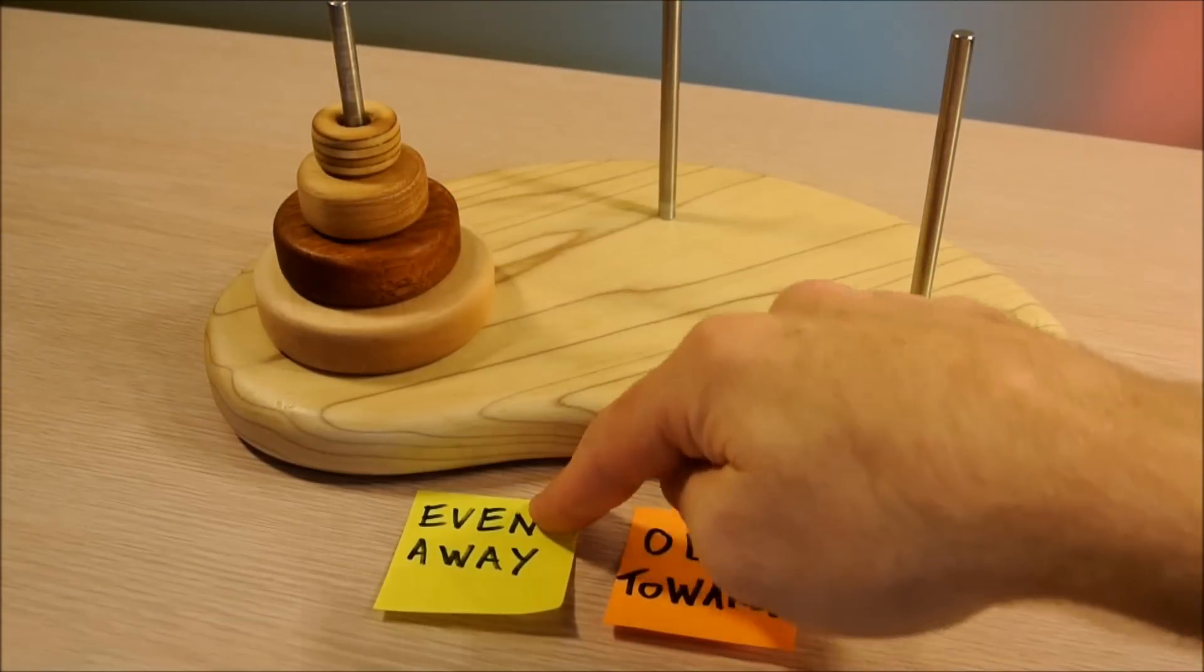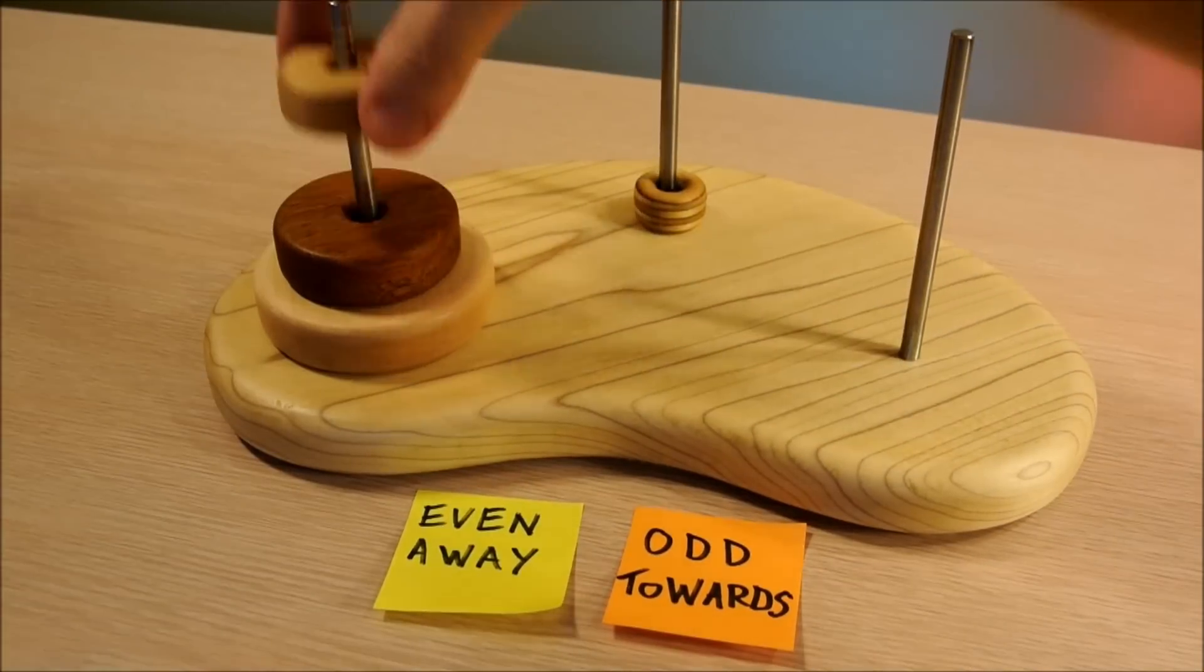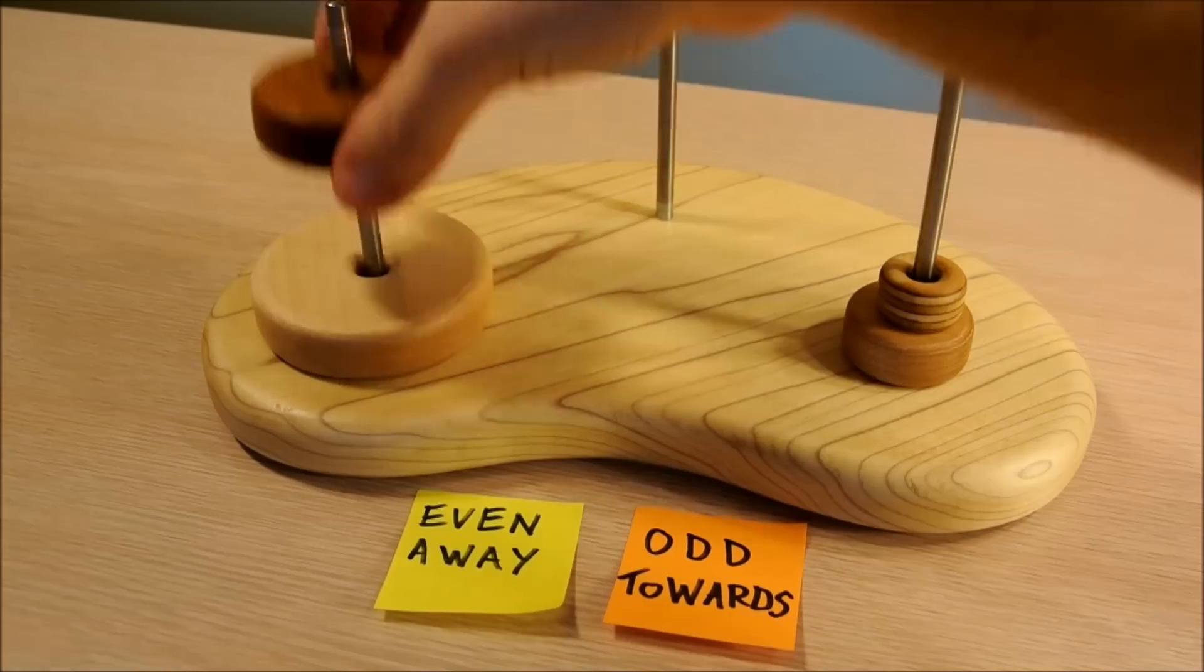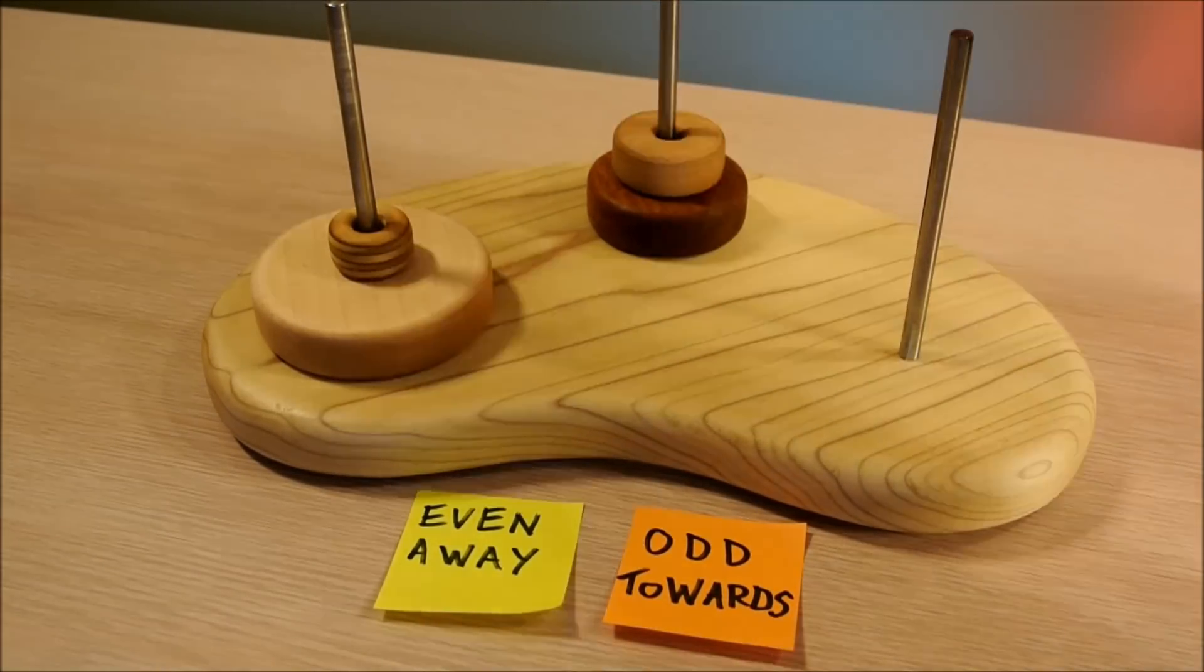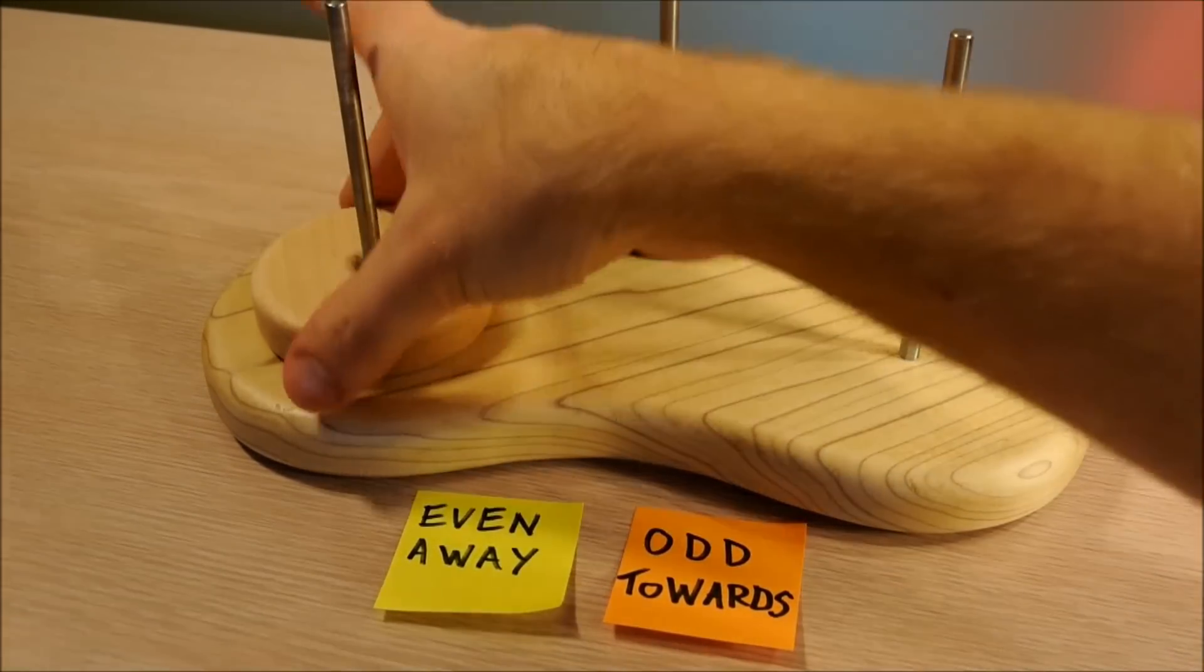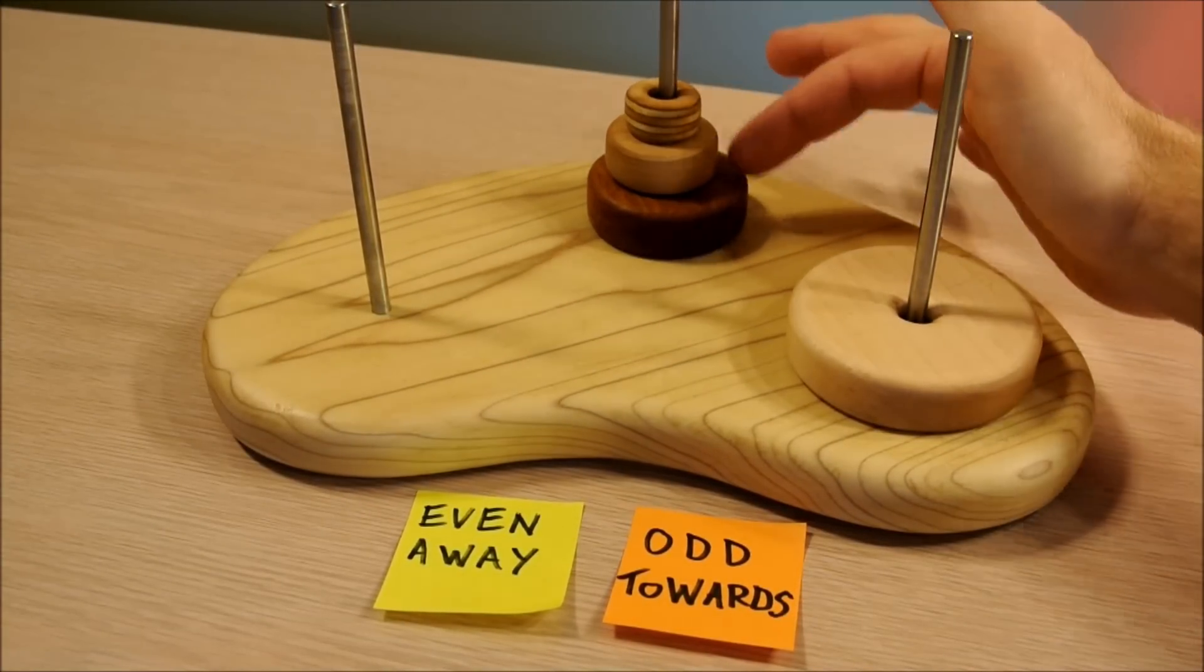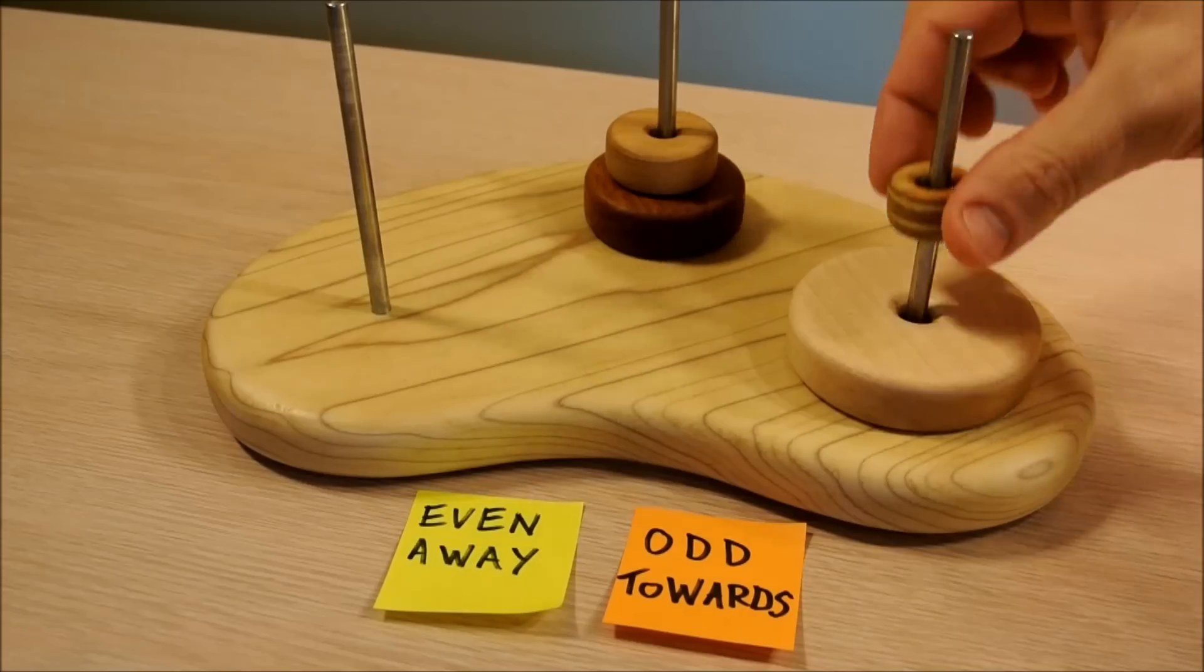We add a fourth, it's even. We move away from our goal. The rule still applies. We have an odd number. We want to move here, so we move towards the goal.